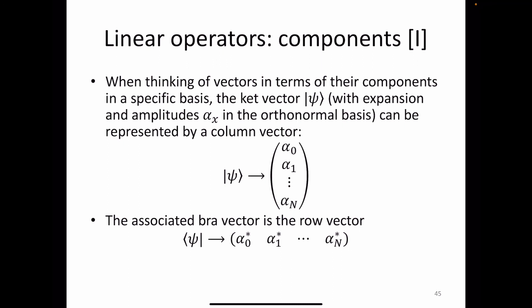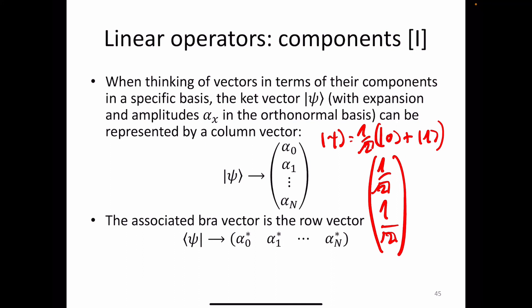In terms of components, the ket vector psi with expansion amplitudes a sub x in the orthogonal basis is represented by a column vector containing those probabilities. Looking at the simple superposition state of 0 and 1, the vectorial representation is the column vector of amplitudes, and the associated bra row vector is just its transpose — since we have no complex numbers here.